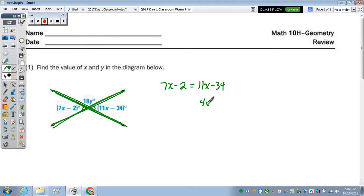Subtract the 11x, you have negative 4x, add 34, you get 32, and divide by negative 4, x is 8.